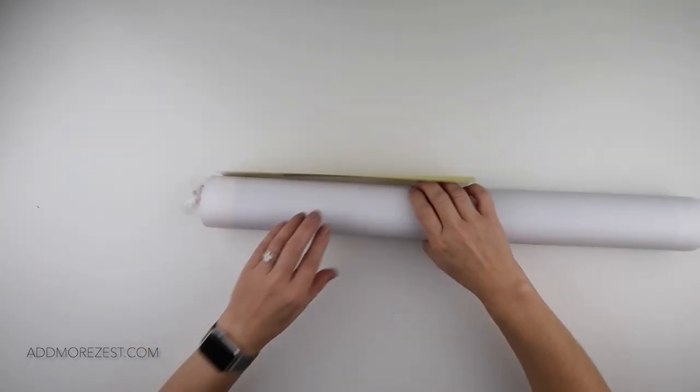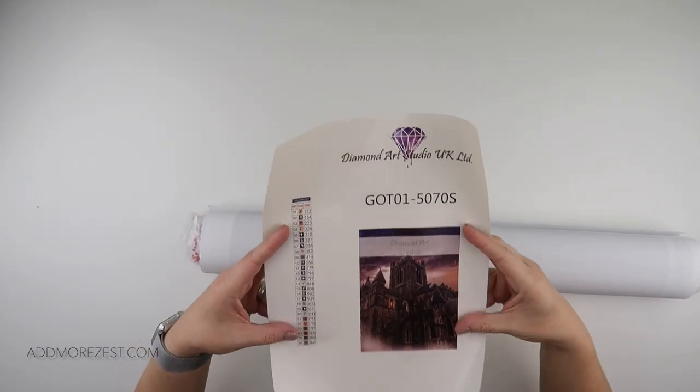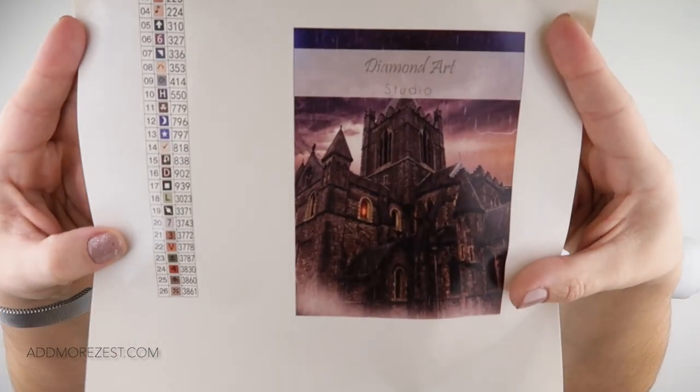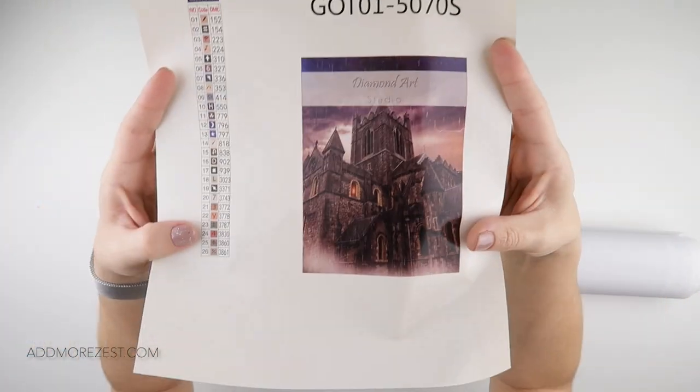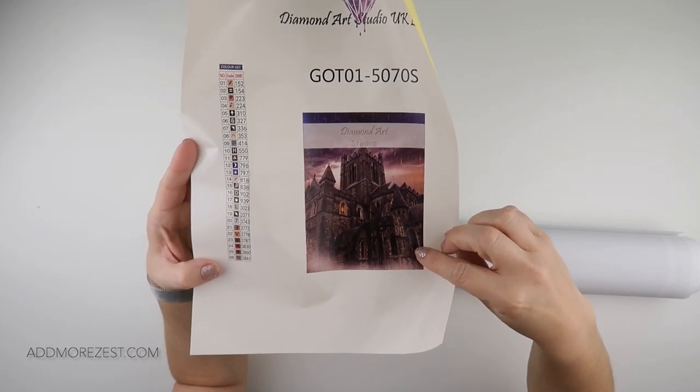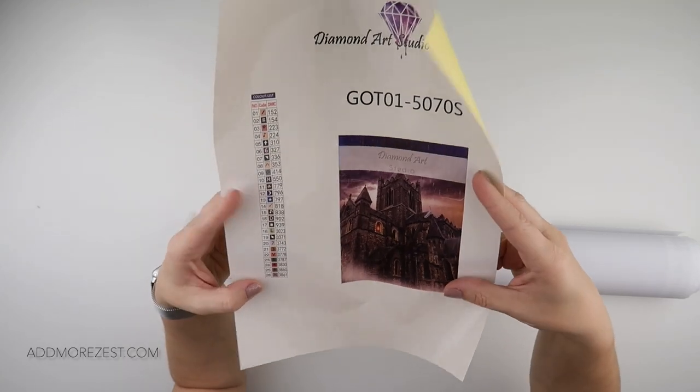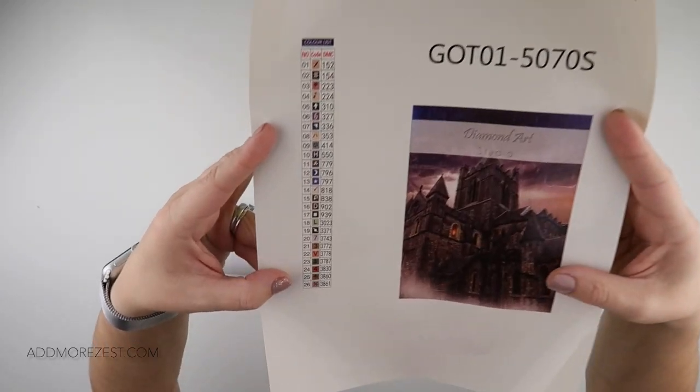She doesn't know how she managed to miss that it was there, but she's very excited that she has now found it. This one is Stormy Castle. She saw this—I think somebody posted a picture on one of the groups of them either working their way through it or having completed it.